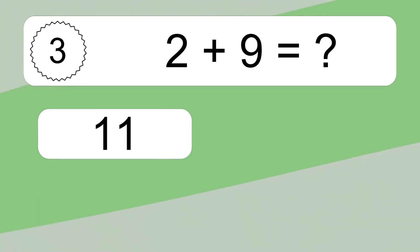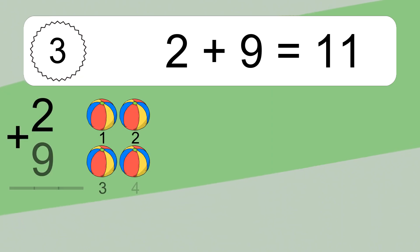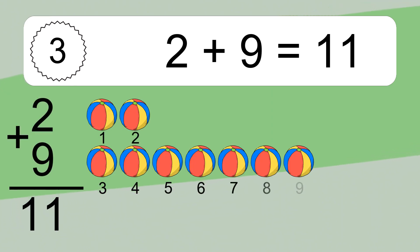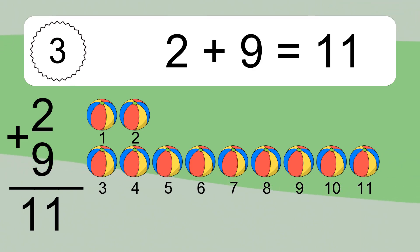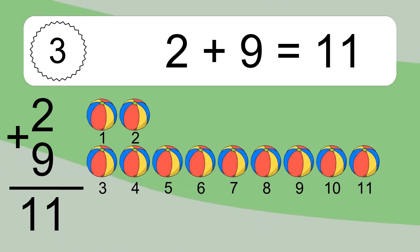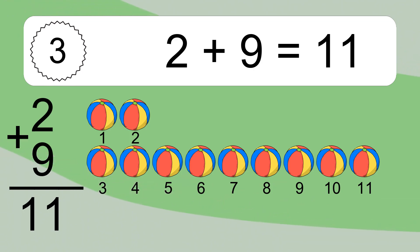2 plus 9 equals what? 2 plus 9 equals 11. Let's count it: 1, 2, 3, 4, 5, 6, 7, 8, 9, 10, 11.